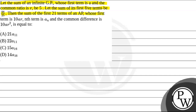Then find the sum of the first 21 terms of an AP whose first term is 10R, Nth term is AN, and the common difference is 10AR squared. This question has four options and we need to find the sum of the first 21 terms of an AP.